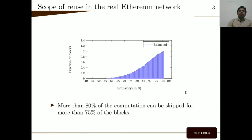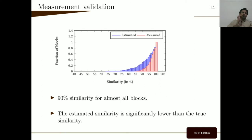From the plot, we can see that over 80% of computation can be saved for more than 75% of blocks. We validated our approach by connecting the 11th node to our own instrumented nodes. We calculated the actual similarity of each block on our instrumented node and estimated the similarity from the 11th node. We observed that the estimated similarity is significantly lower than the actual similarity, so the actual similarity in the real Ethereum network must be greater than what we have estimated.